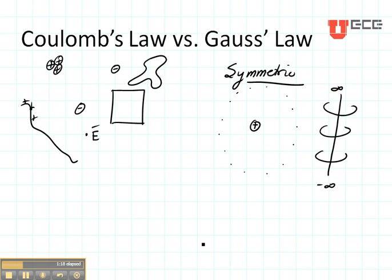The advantage of Gauss's law is typically it's a little bit easier, or it can be easier. But Coulomb's law is more general.